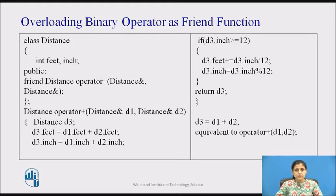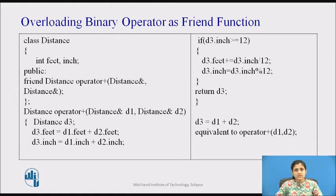We can overload an operator by using a non-member function, which is usually a friend of the class. Since a friend function is not a member of the class, it does not have a this pointer. So operands are explicitly passed to an overloaded friend operator function. In this example, operator plus is declared with the friend keyword and defined outside the class without using the scope resolution operator. It accepts two objects by reference, adds the values, stores the result in a third object d3, and returns d3. The statement d3 = d1 + d2 is equivalent to operator+(d1, d2), which calls the friend function.